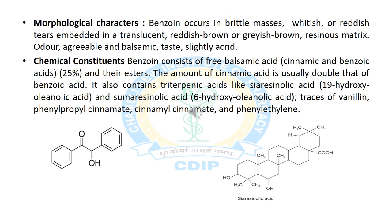Now we will discuss the morphological characters of Benjoin. It is found in tear shape, with reddish brown or grayish brown color. It has an agreeable odor and a slightly acrid taste. The chemical constituents of Benjoin include balsamic acids, which are cinnamic and benzoic acids, and also various triterpene acids like siaresinoic acid and sumaresinolic acid. It also contains traces of vanillin, phenylpropyl cinnamate, cinnamyl cinnamate and phenylethylene.